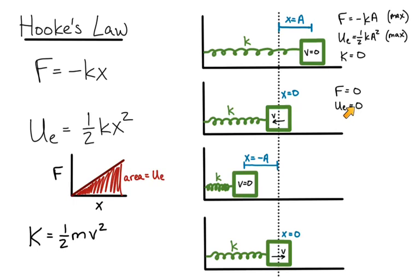Our elastic energy is also zero, again, because our X is zero. And our kinetic energy is maximized here. This is where it's got the fastest velocity, because after this point, it's going to start to slow down again. And that's because this spring is going to be pushing it back to the right to slow it down.